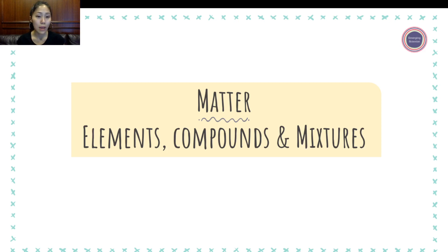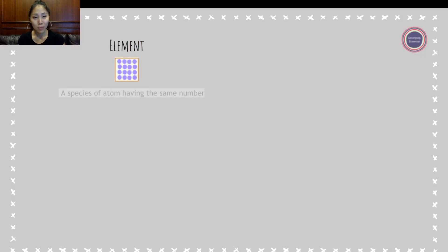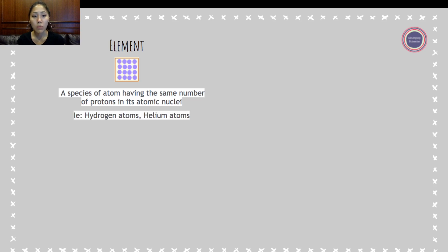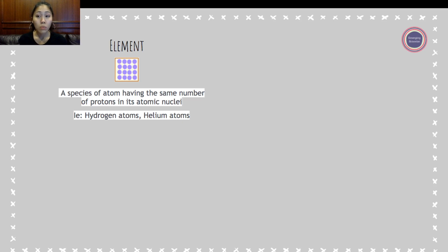We're going to start today by defining what element, compound, and mixture are. First up: element. An element is a species of atom having the same number of protons in its atomic nuclei. Examples of elements could be hydrogen, helium, nitrogen, oxygen, neon, fluorine — pretty much anything that's on the periodic table.